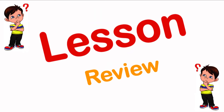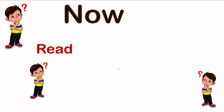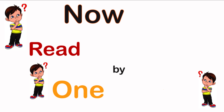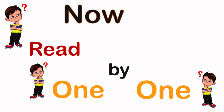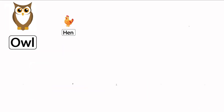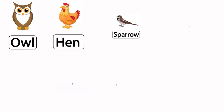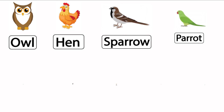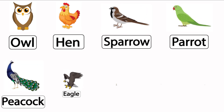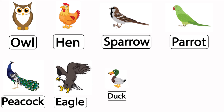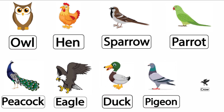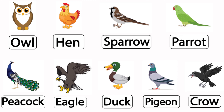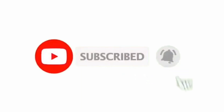Lesson review. Now read one by one. Owl. Hen. Sparrow. Parrot. Biggook. Eagle. Duck. Pigeon. And crow.